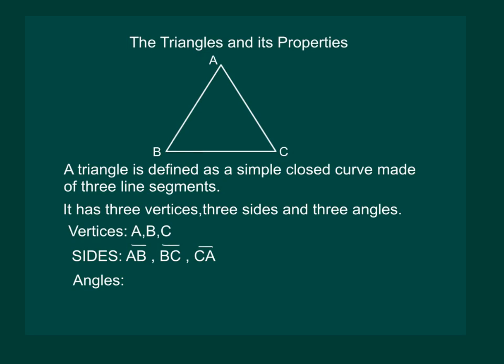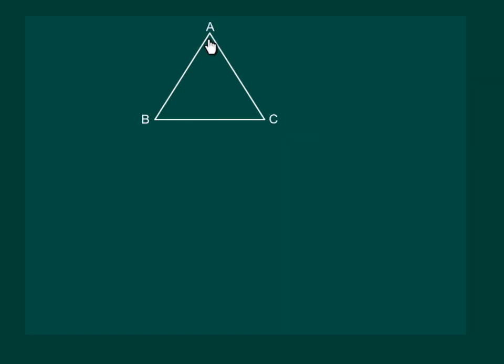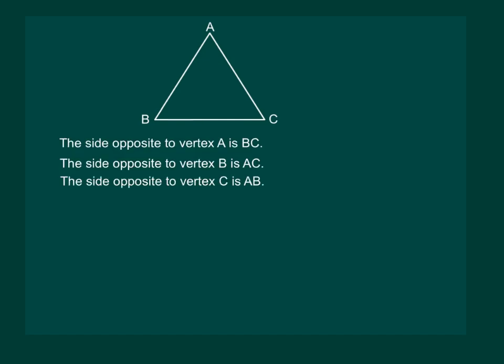We can also name the angles as angle BAC, angle ABC and angle BCA. Side opposite to vertex A is BC and similarly to vertex B, AC is the side opposite to it and for vertex C, AB is the side opposite to vertex C.